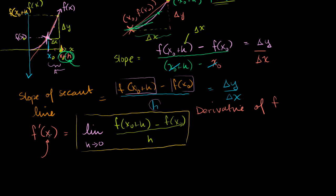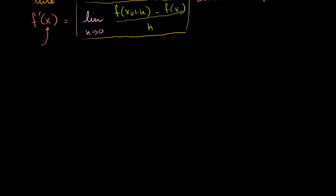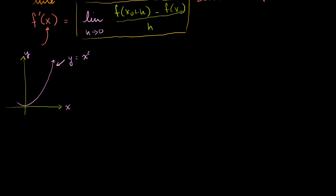So let's apply this to make things more concrete. I'll do a particular case where I want to find the slope at exactly some point. Let me draw some axes. Let's say I have the curve y = x². I want to know the slope at the point x = 3. You can imagine a tangent line that just barely grazes the curve at that point. What is the slope of that tangent line, which is the same as the slope of the curve right at that point?